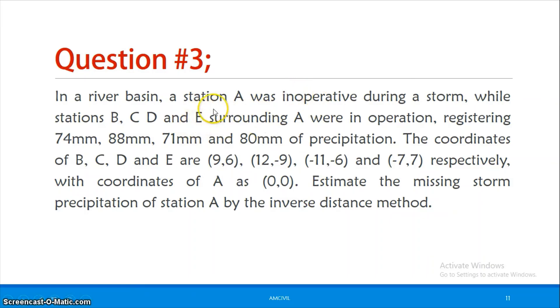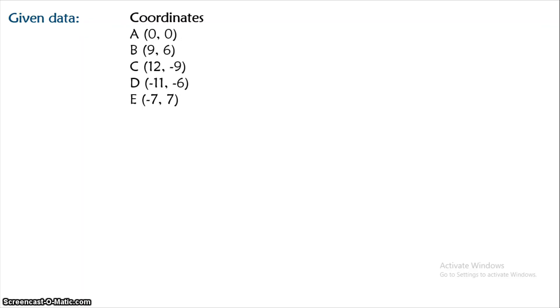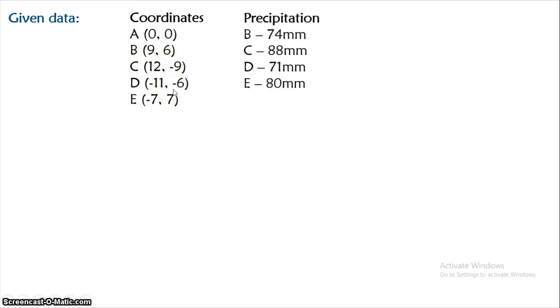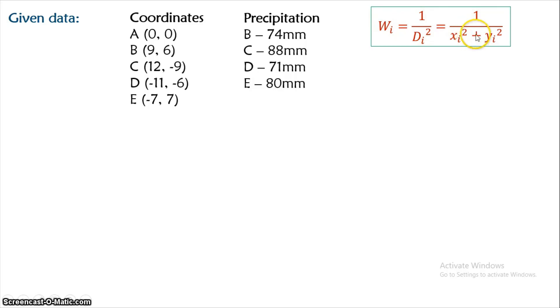There are 5 stations: A is inoperative, and B, C, D, E provide rainfall readings. Taking A as (0,0), we calculate distances and weightages for each index station. For B at (9,6): dB² = 9² + 6² = 117, so wB = 1/117 = 8.547×10⁻³. For C at (12,9): dC² = 12² + 9² = 225, so wC = 4.444×10⁻³. For D at (11,6): dD² = 11² + 6² = 157, so wD = 6.369×10⁻³.